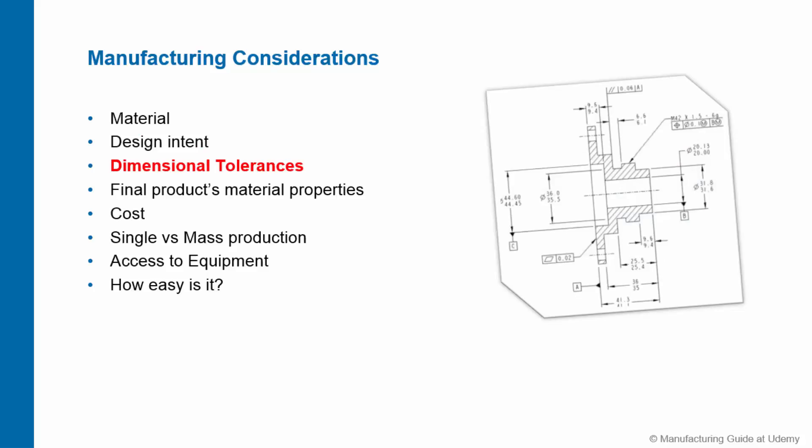Dimensional Tolerances: How accurate do you want your product to be? Does your 2-inch long product have to be exactly 2 inches or are you okay with 2.005 inches? Are you okay with 2.1 inches? You have to ask these questions to yourself. Generally, the tighter your tolerances are the more it will cost you to make the product. So if you don't need so much accuracy in your design then don't go for it, because it will be much more economical for you that way.